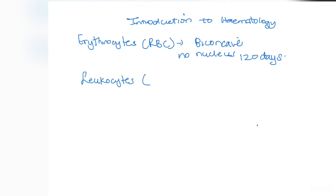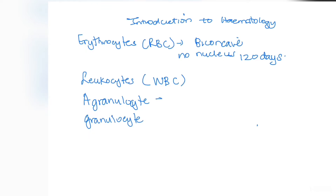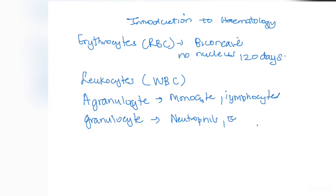Next we have leukocytes, which is just a fancy name for white blood cells. Leukocytes are divided into two categories: agranulocytes, which have no granules, and granulocytes, which do have granules. Agranulocytes end in '-cyte' — so monocytes and lymphocytes. Granulocytes are your neutrophils, eosinophils, and basophils. Lastly, you have your platelets.